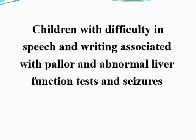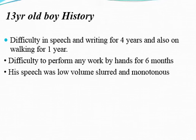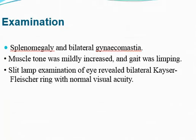Children present with difficulty in speech and writing associated with pallor, abnormal liver function tests, and seizures. The first scenario is a 13-year-old boy who came with a history of difficulty in speech and writing for the last 4 years, difficulty in walking for the last 1 year, and difficulty performing work by hand for the last 6 months. His speech was low volume, slurred, and monotonous. Examination shows splenomegaly and bilateral gynecomastia. Muscle tone was mildly increased and gait was limping.